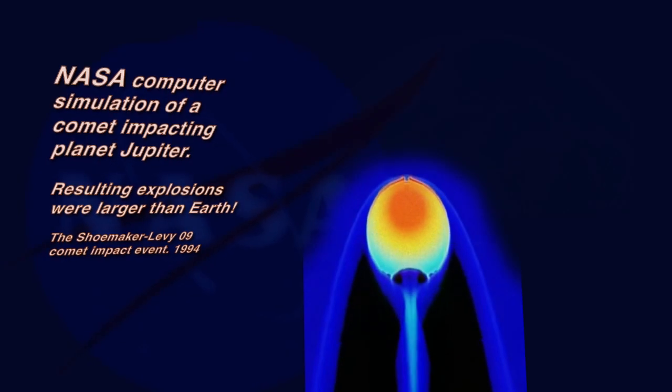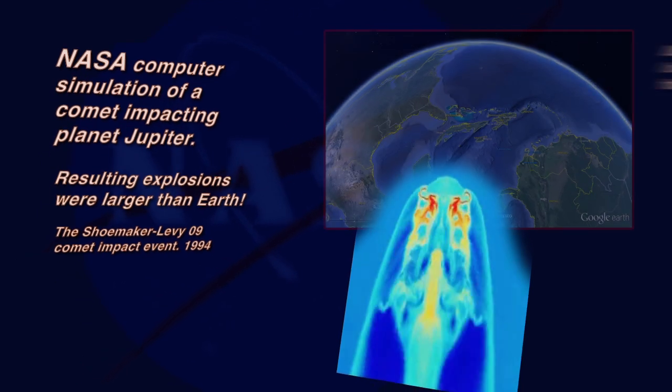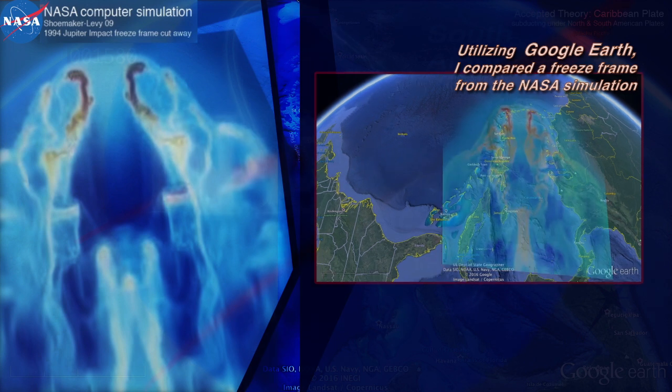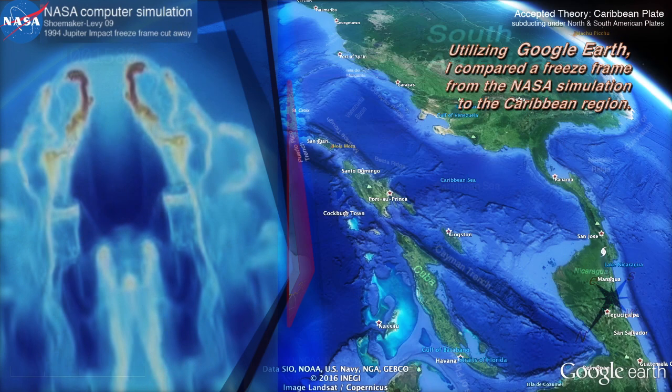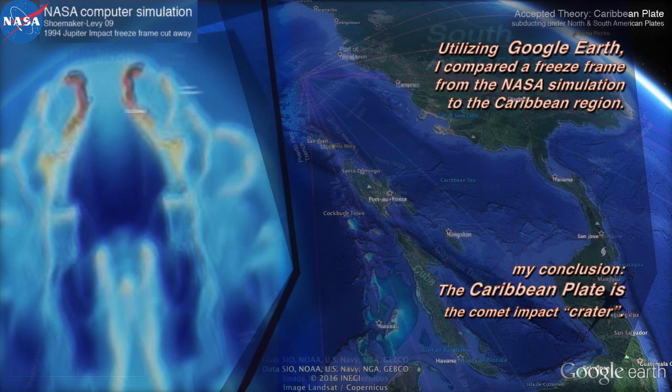The next 60 seconds could change human history. This NASA computer-generated simulation of a comet strike into Jupiter—I noticed that several frames match the topography of Google Earth in the Caribbean plate area. Here on the left,